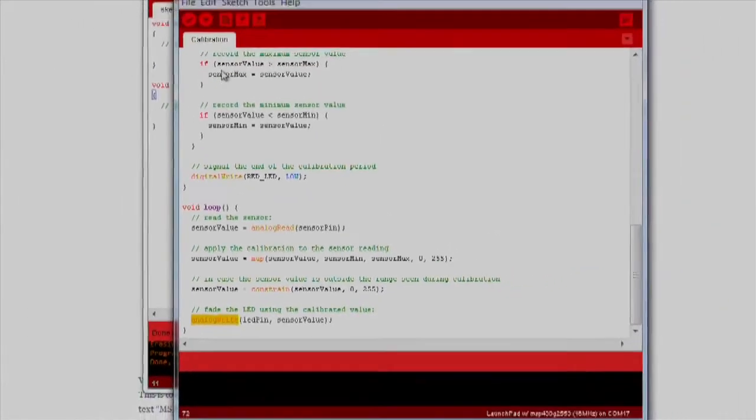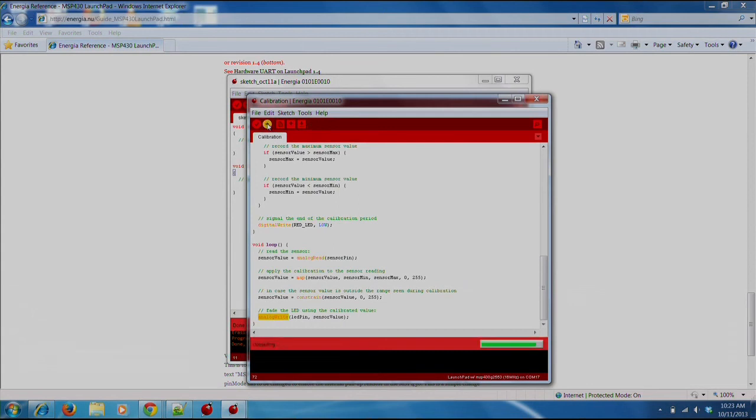And that's it. Just run your code by pressing the verify and download button, and let's start changing the LED's brightness by waving our hand in front of the photodiode.